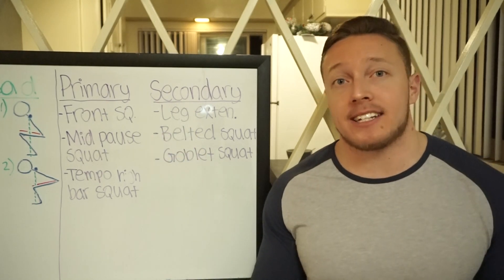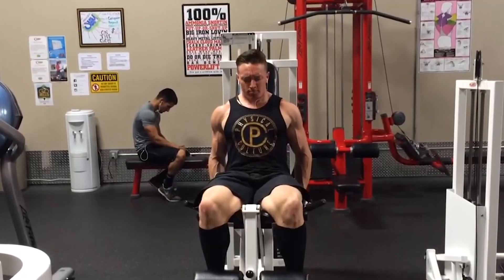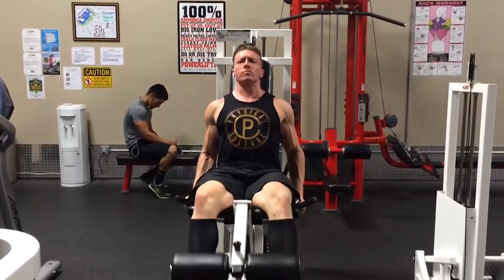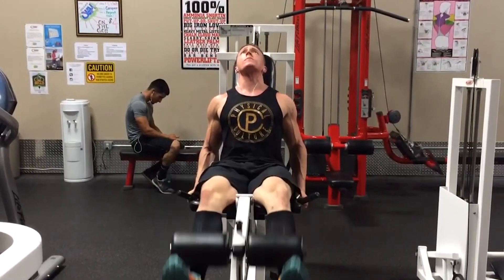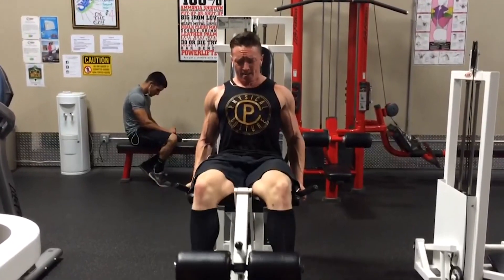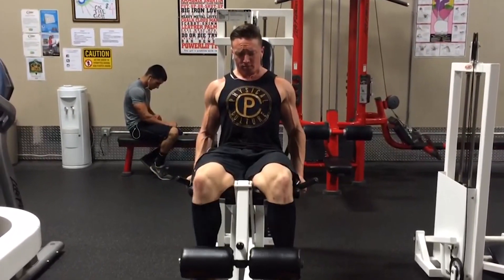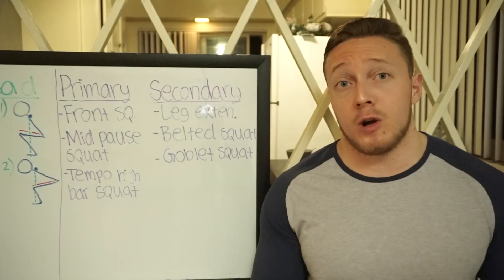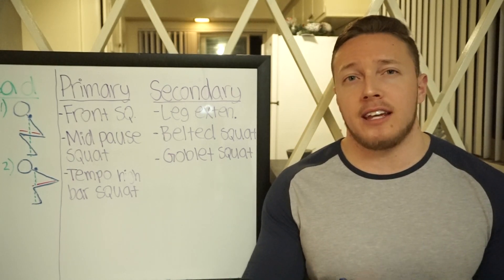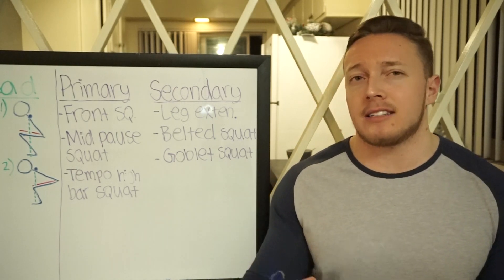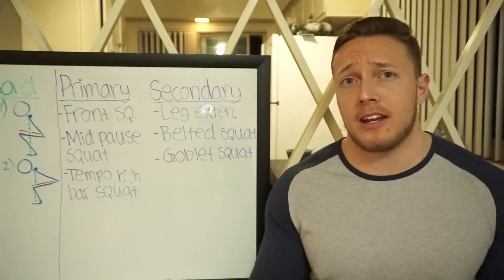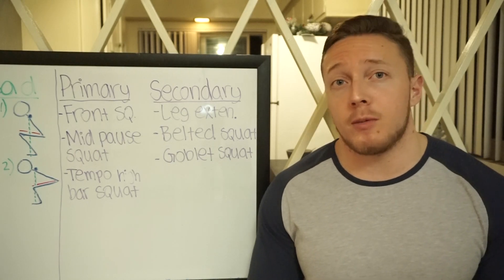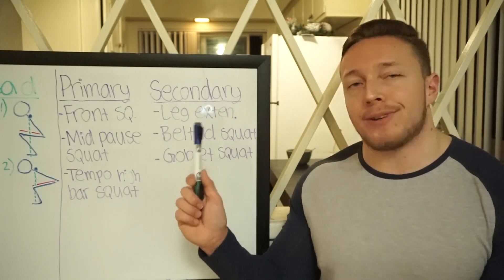Moving on to secondary exercises: leg extensions. Single joint movement — obviously not something that will have a lot of carryover to the squat, but if you have weak quads you definitely want to train them. Leg extensions are great for really high reps, even as high as 30. There's a lot of data showing that if you go to muscular failure the rep range doesn't matter too much for muscle growth, and it also alleviates joint pain. A lot of times people can't do leg extensions without pain, so high reps or doing them occluded is a great way. You can also do sets of 10 or 12. Great way to hammer the quads.